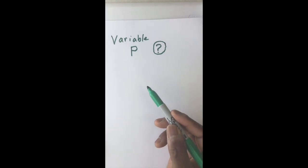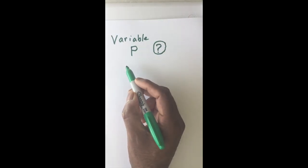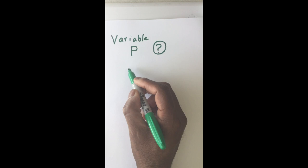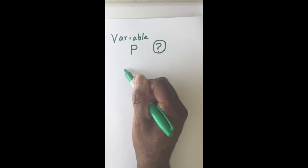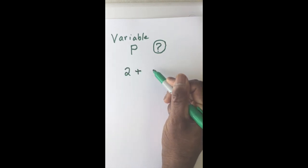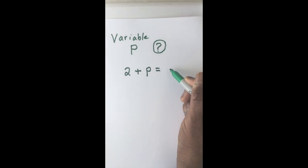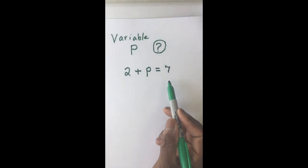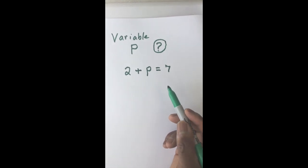Now let's look at an equation to find the variable. So let's take 2 plus P equals 7. That's an equation.